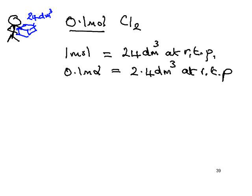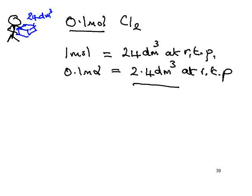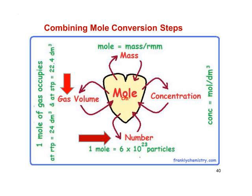Let's check back to make sure we've answered the question: what volume would 7.1 grams of chlorine occupy at RTP? The answer is 2.4 cubic decimetres.